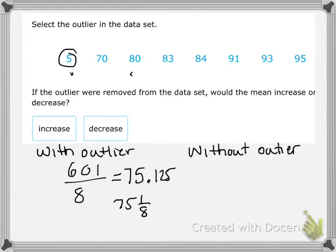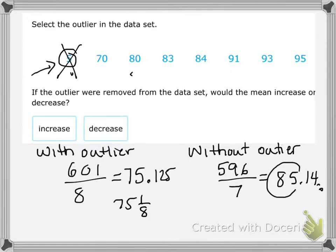All right, now we want to calculate it without the outlier. So I'm going to take out that 5. We're going to add everything up. So now the sum is 596. I've removed the 5 from the total, from the sum. And this time we're dividing by the 7 numbers, so one less number. And that gives us a mean of 85.14 and it goes on. So you notice what happens when we remove the smaller outlier. Our mean increases.